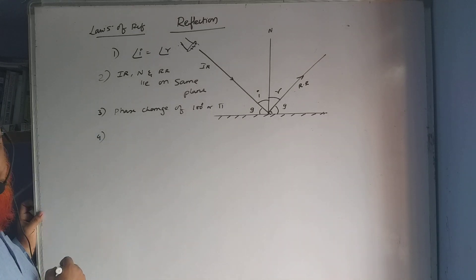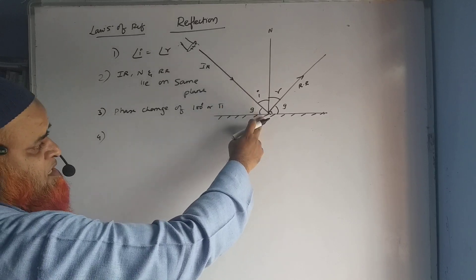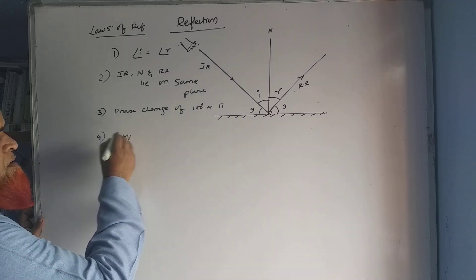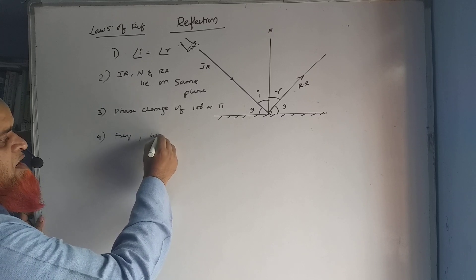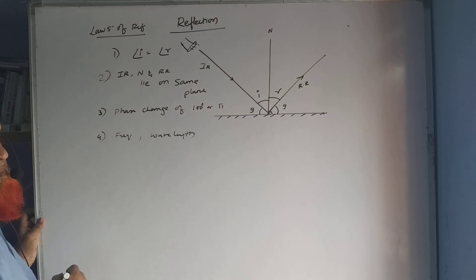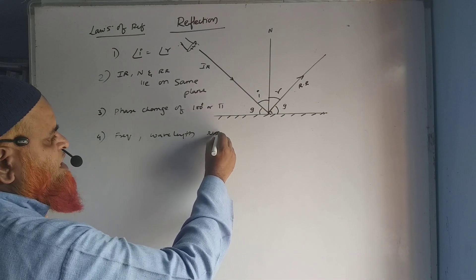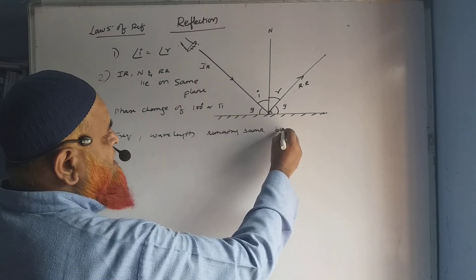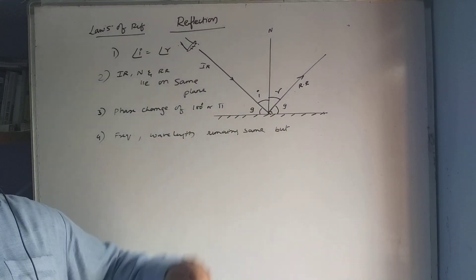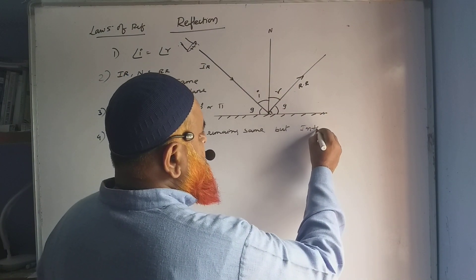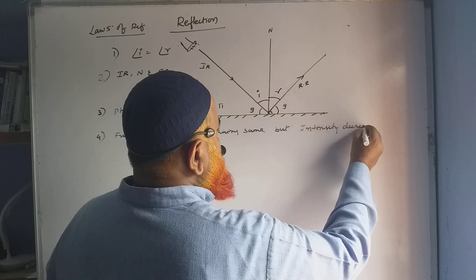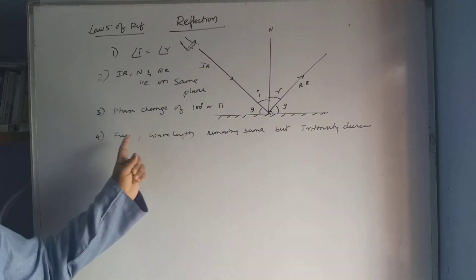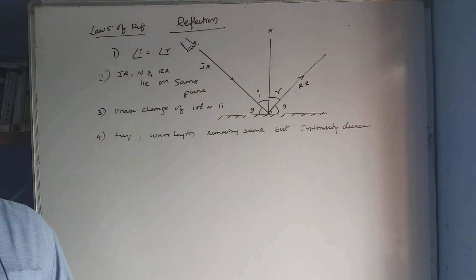The fourth point is that whenever light falls on a mirror and reflects back, the frequency and wavelength remain the same. However, one thing does change: the intensity. Intensity decreases upon reflection. So wavelength remains the same, frequency remains the same, but intensity decreases.